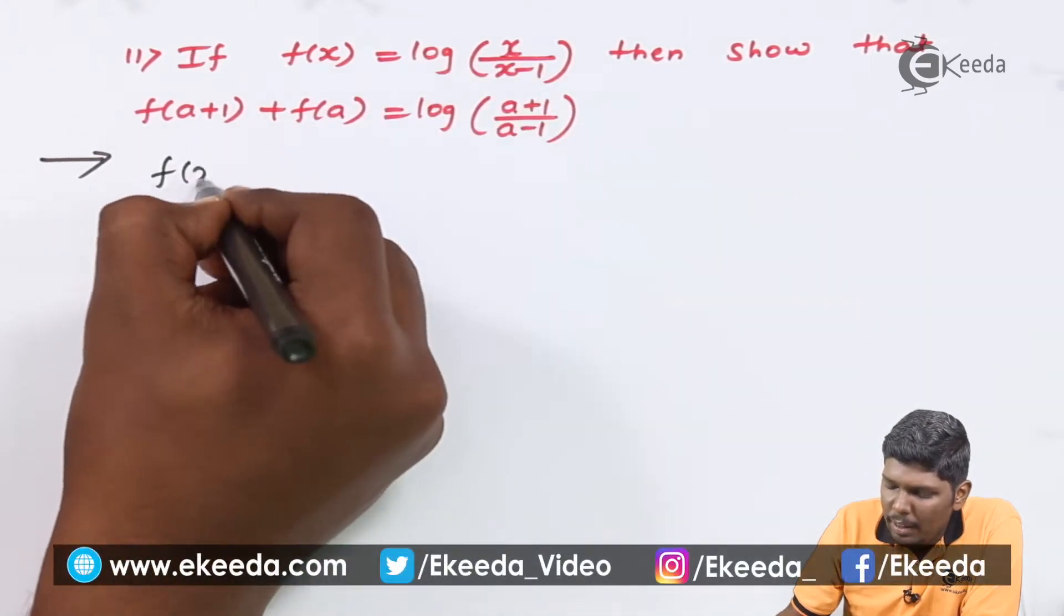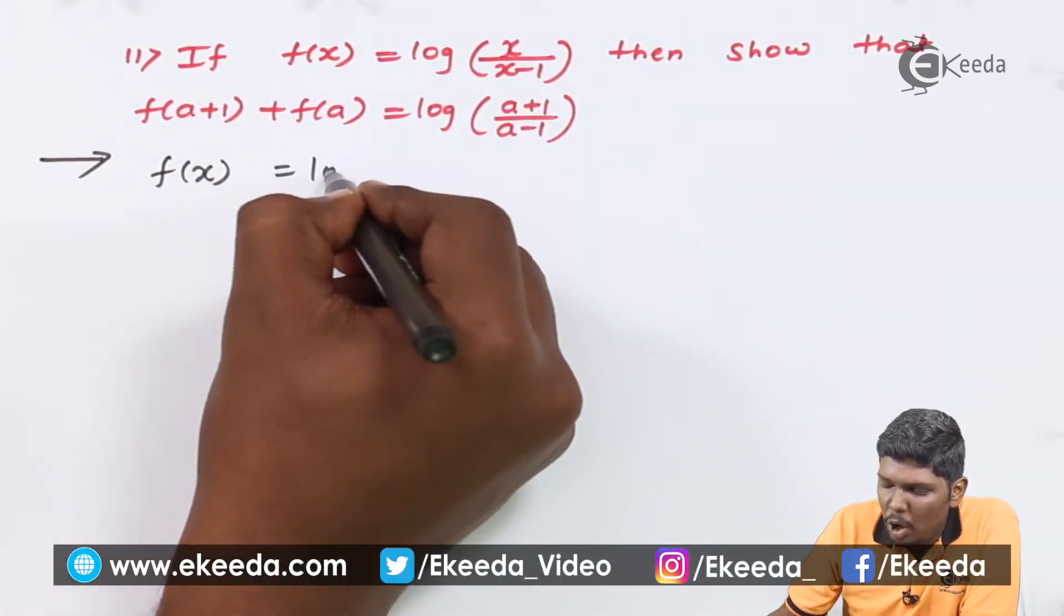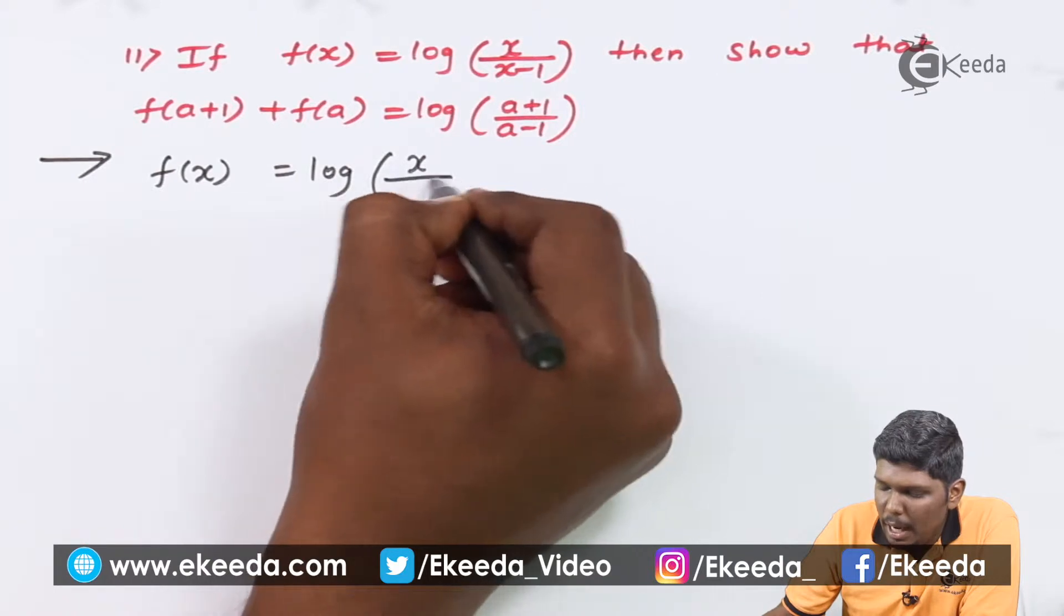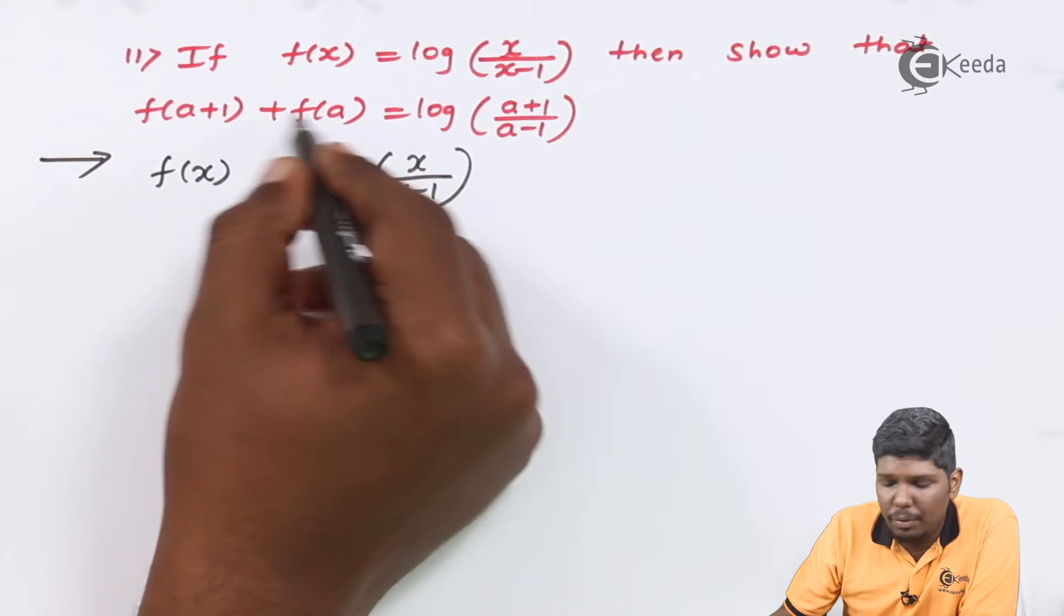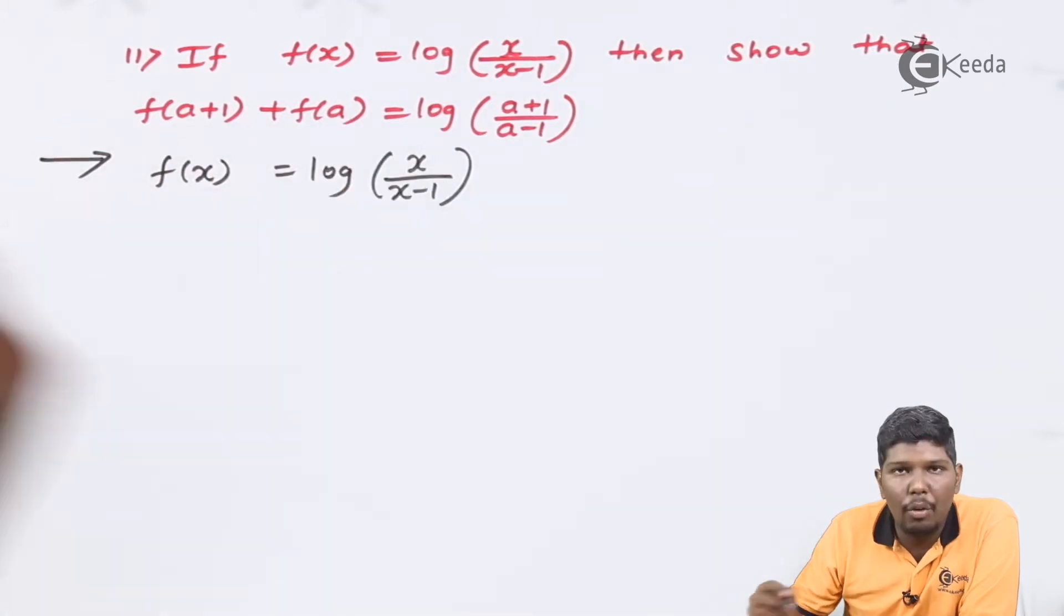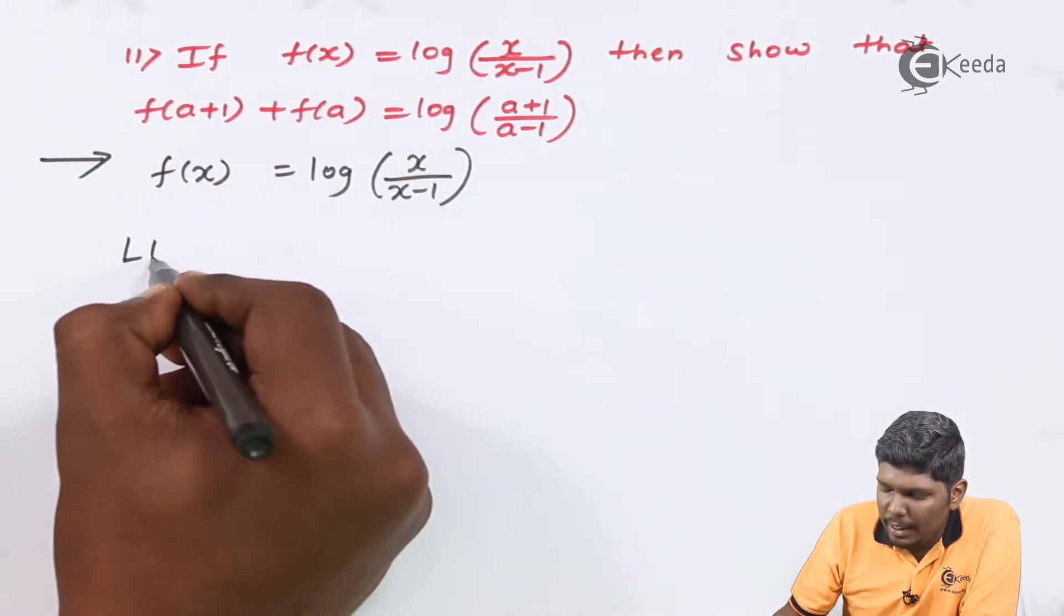So again, the given part is f(x) = log(x/(x-1)). If you see in the LHS, we need two terms. First is f(a+1), second is f(a). So, let us consider the LHS.